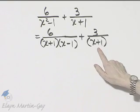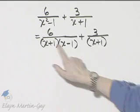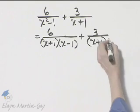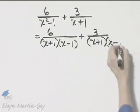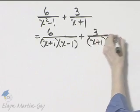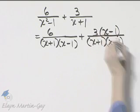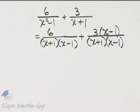What do I multiply this denominator by in order to make it look like this denominator? I would multiply the denominator by x minus 1. Now if I multiply the denominator by x minus 1, I must multiply the numerator by x minus 1.